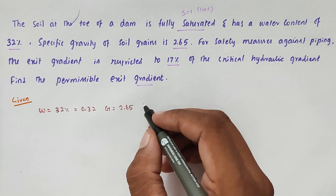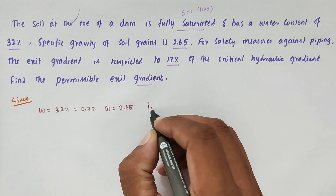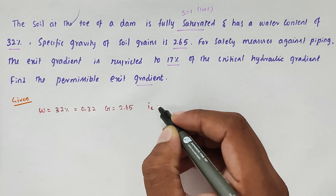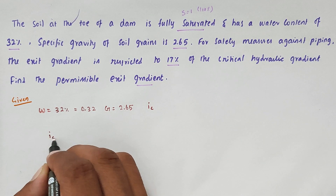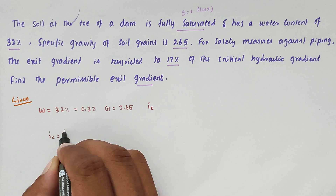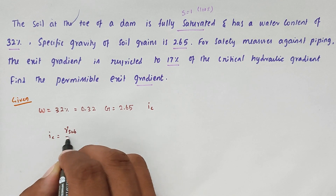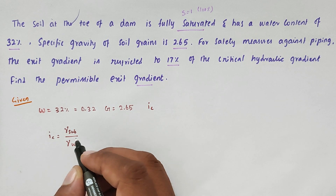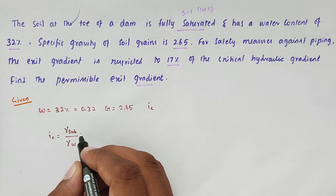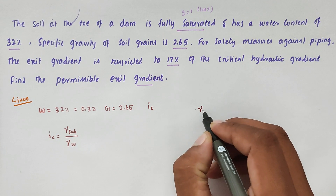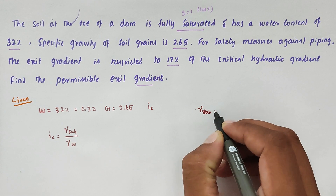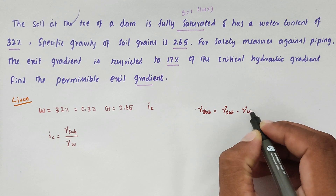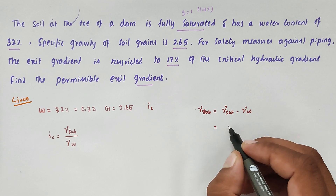Before that, we have to find out the critical gradient IC. The formula is IC equals gamma submerged divided by gamma W. To use this, we first need to find the gamma submerged value. Gamma submerged equals gamma saturation minus gamma W.